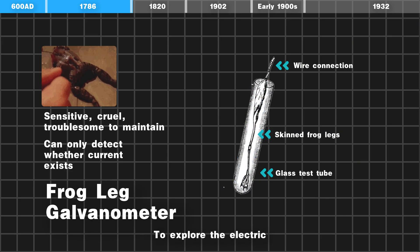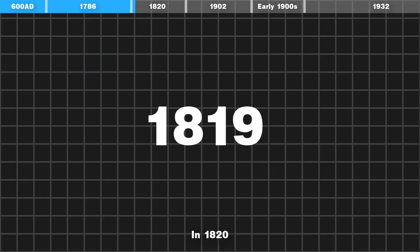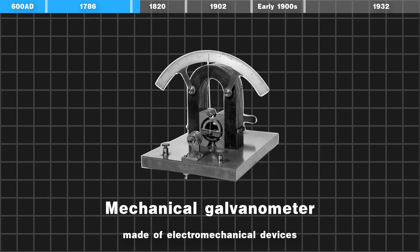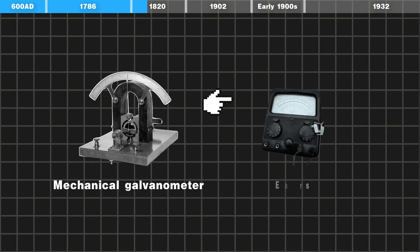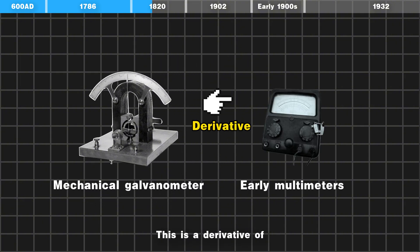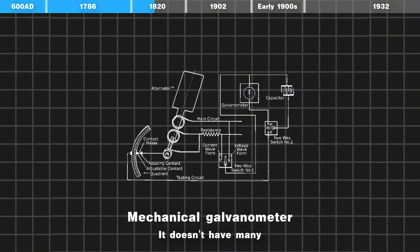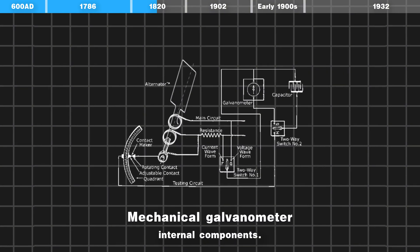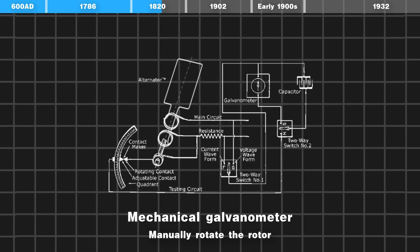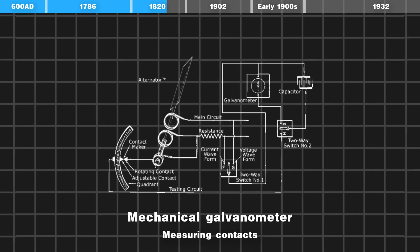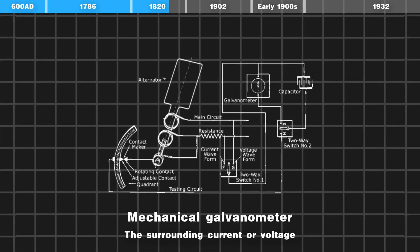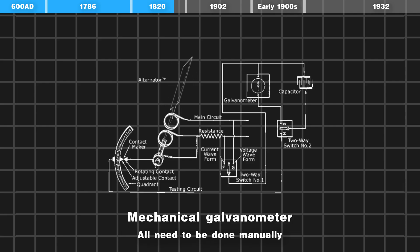To explore electricity further, in 1820, the first galvanometer made of electromechanical devices was invented. This device did not have many internal components, but manually rotating the rotor during measurement, and measuring contacts for surrounding current or voltage, all needed to be done manually.